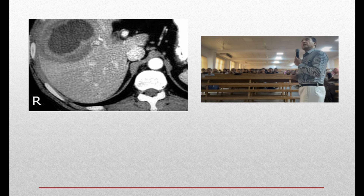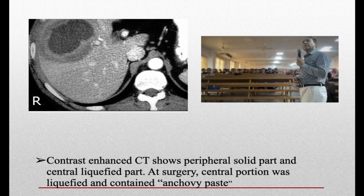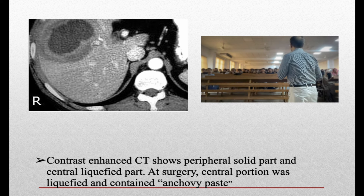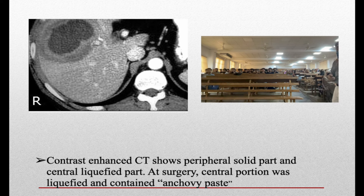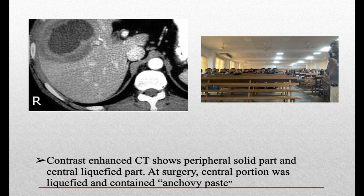On CT scan you can clearly see the edematous liver around the abscess and the normal liver tissue. On a contrast-enhanced CT scan — identifiable because the aorta has the same density as bone, indicating contrast — you can see a bright peripheral area in the liver. This confirms a contrast-enhanced CT showing a solid peripheral part and central liquefied part.